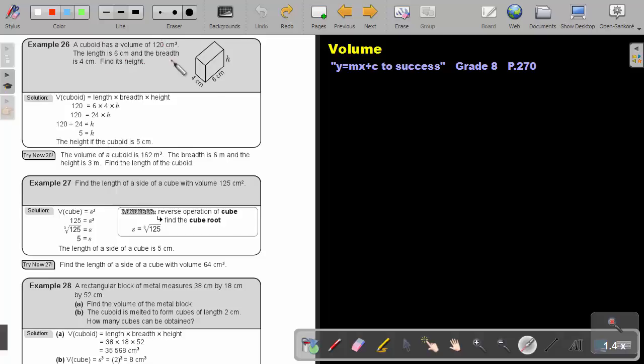Again, I'm giving you the volume and I want a side. So just start with the formula. Write it down, then do substitution. The volume, the length, the breadth, and I'm looking for the height. Now it's an equation and I just solve the equation.